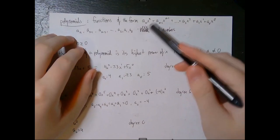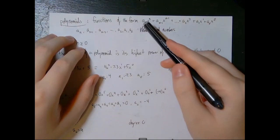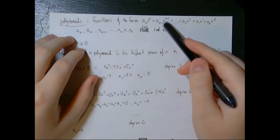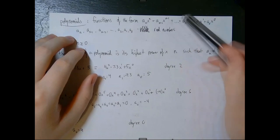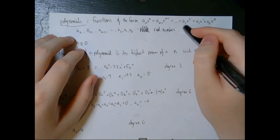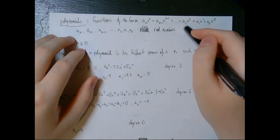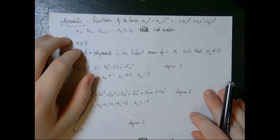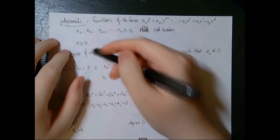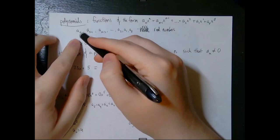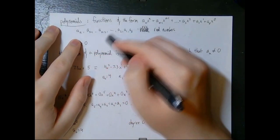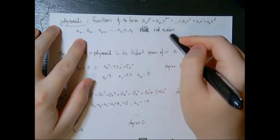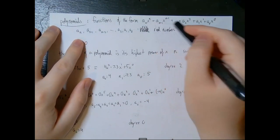For those who may not remember, polynomials are functions of the form a_n times x to the nth power plus a_(n-1) times x to the n minus 1 power, and so on, all the way down to a_2 times x squared plus a_1 times x to the first plus a_0 times x to the 0. These values a_n, a_(n-1), a_(n-2), through a_2, a_1, a_0 are all real number coefficients of each term of this polynomial.